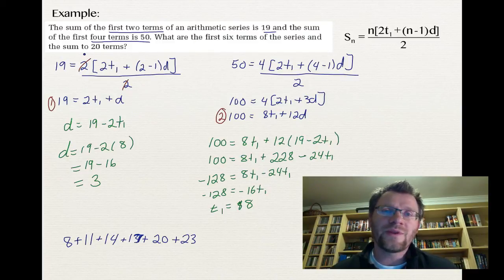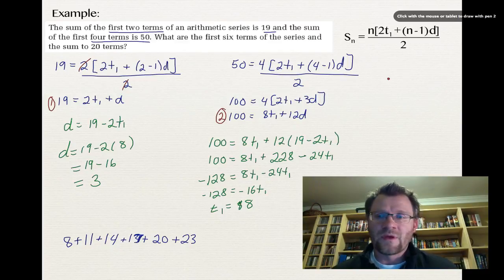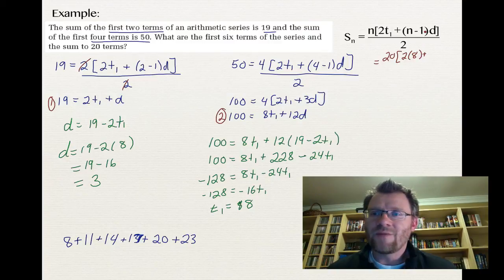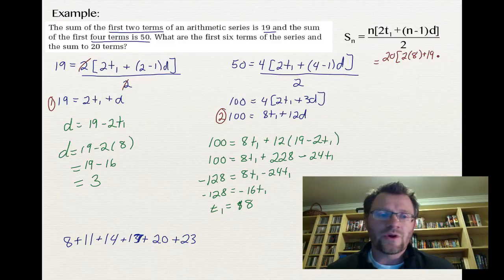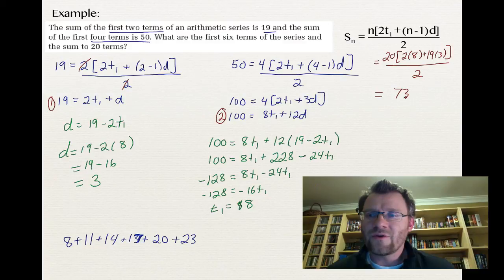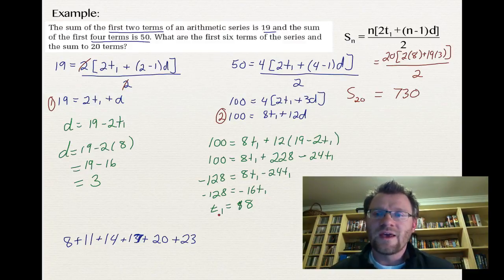For the last part, we find the sum to 20 terms using the formula: S20 = 20 × [2(8) + (20−1)(3)] / 2 = 20 × [16 + 57] / 2 = 730. The sum of the first 20 terms of this series is 730.